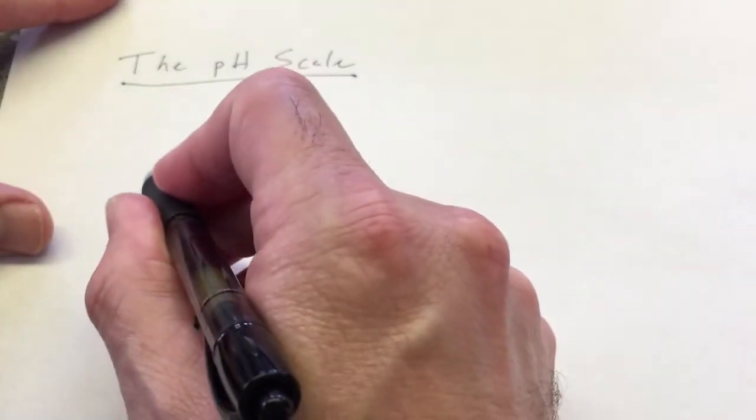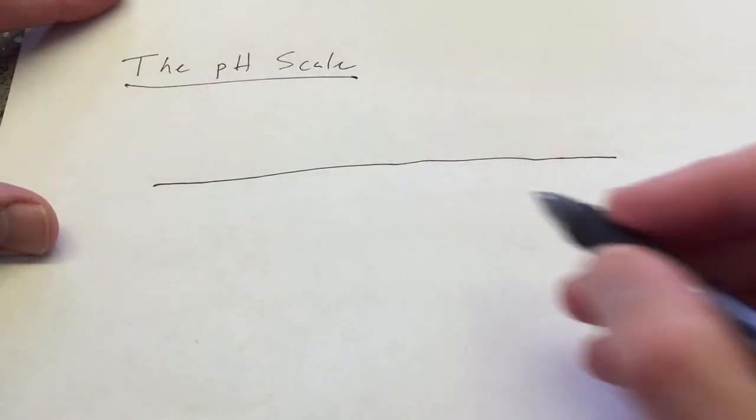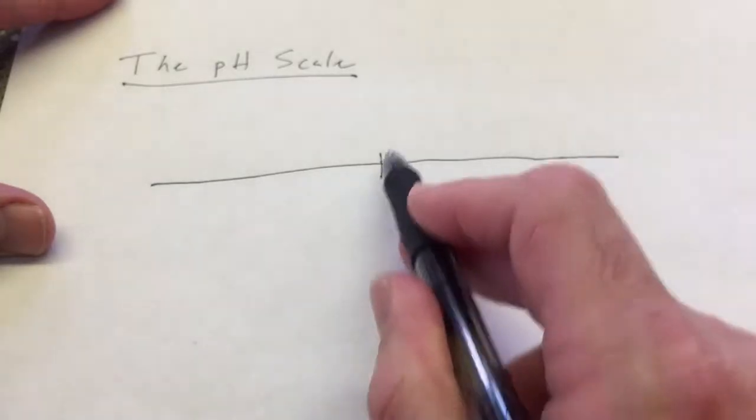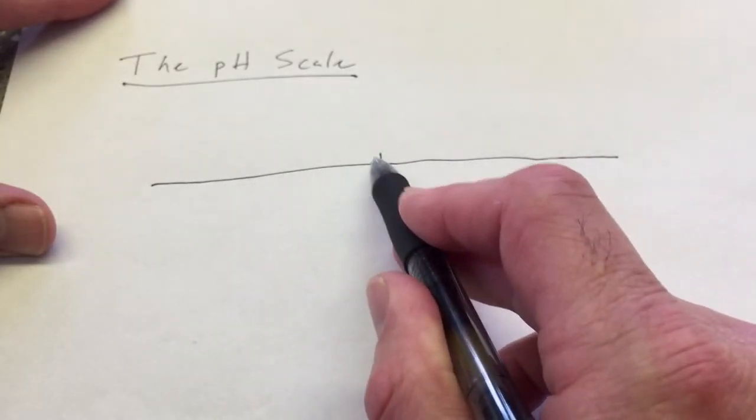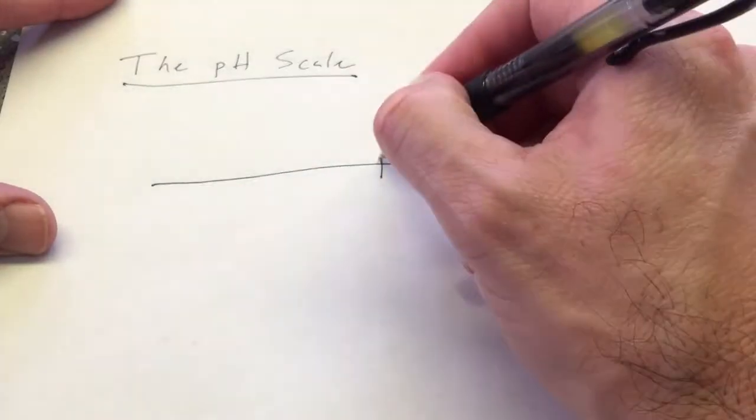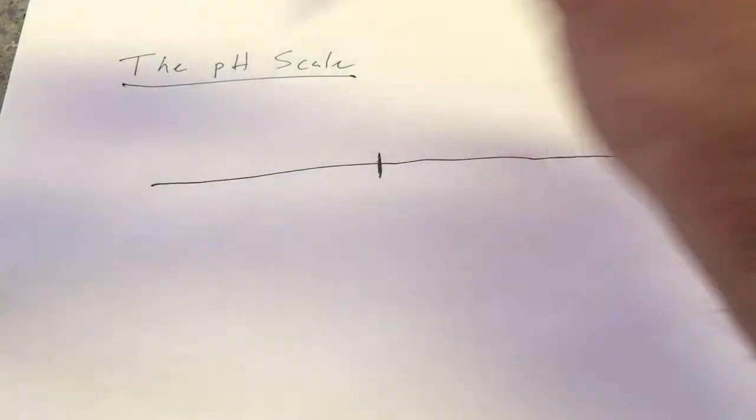I'm going to draw a line, and in the middle of this line, I'm going to put this line down the center. So kind of like the balancing point between this side and this side. On this line right here, I am going to put the number 7.